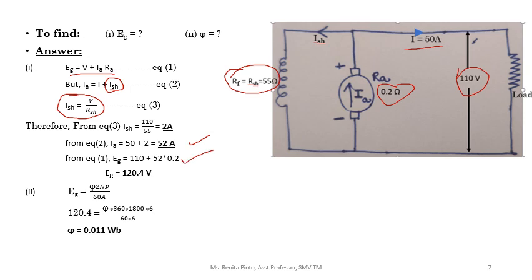First question EG is now solved. For the second question, find flux Phi using the generated EMF equation: EG = ΦZnP / 60A. EG was already calculated; Z, N, P, and A are all given in the question. Calculating, you will get the answer for Phi.